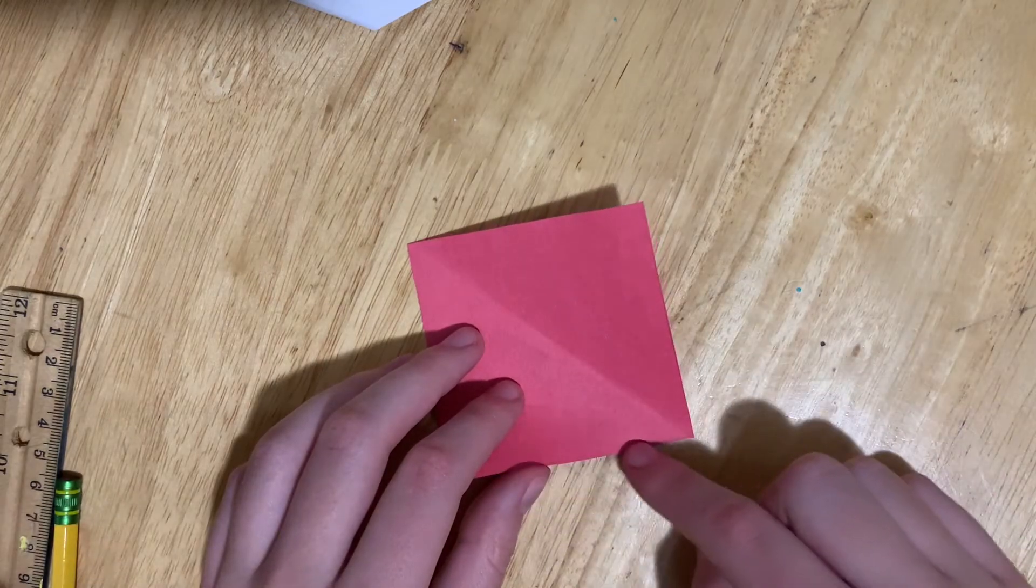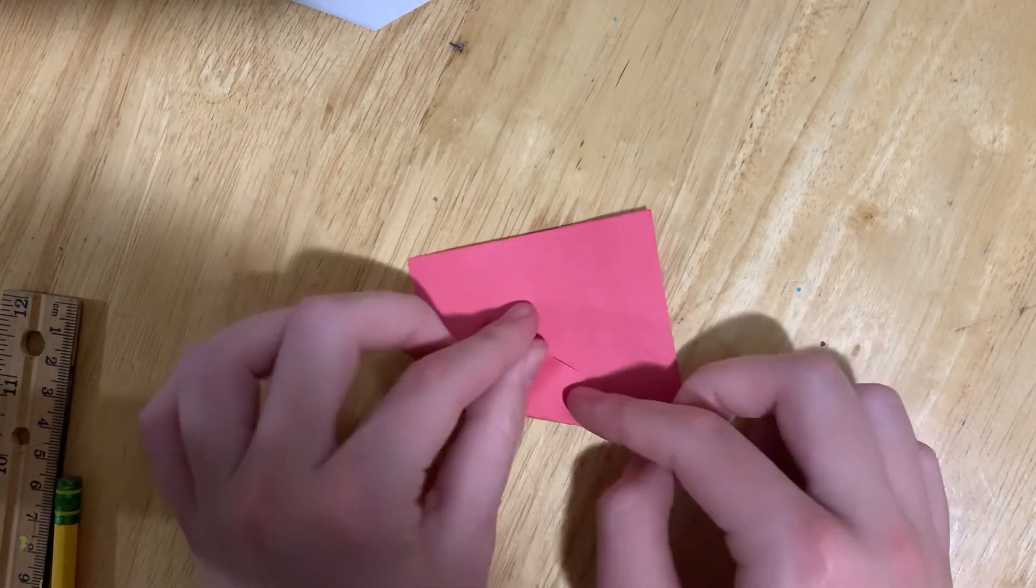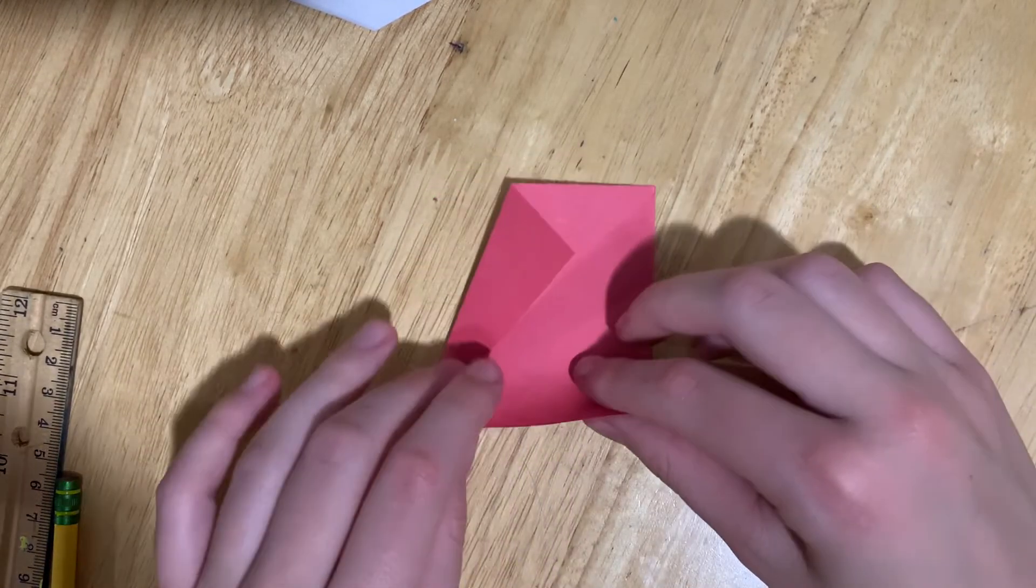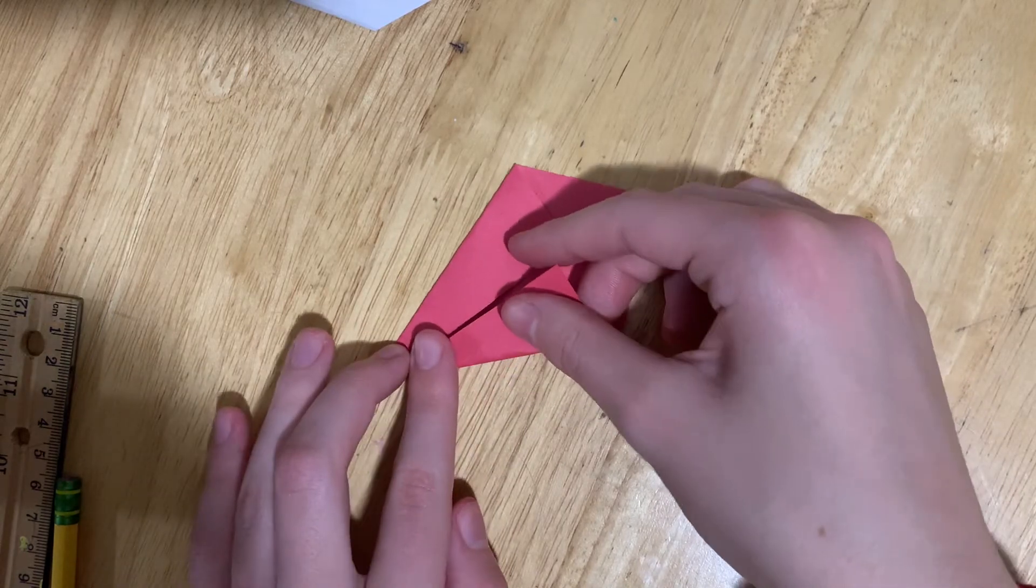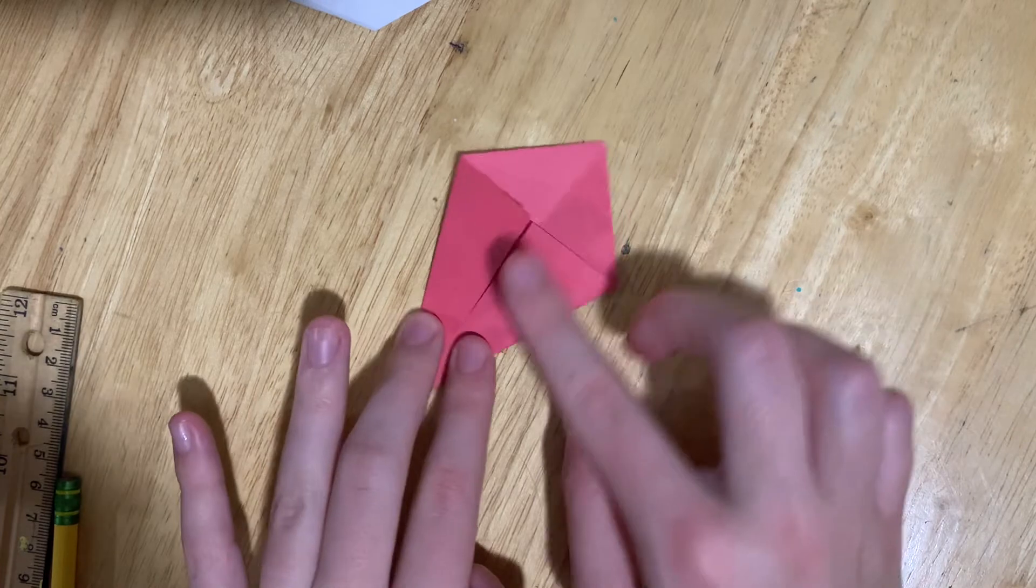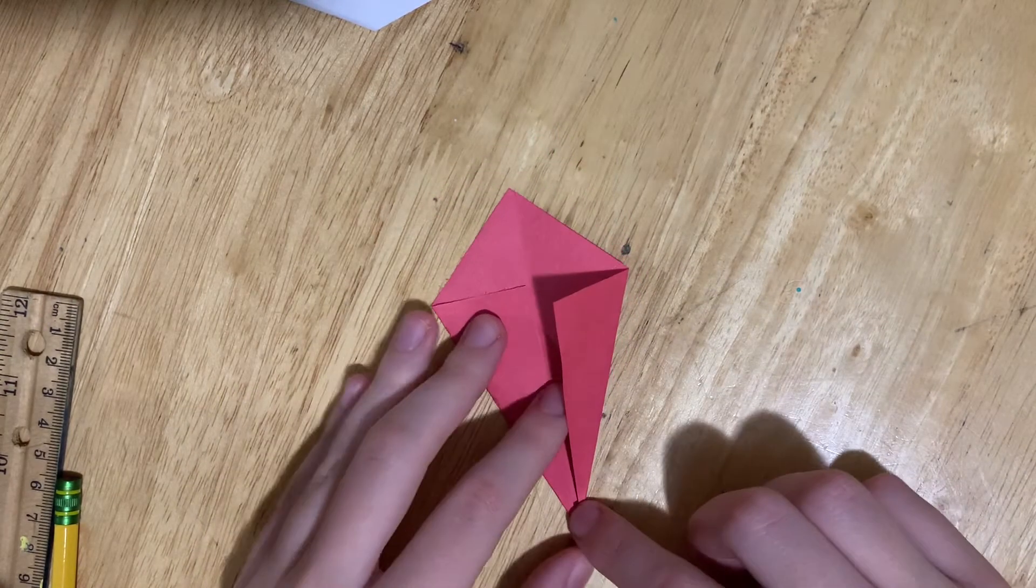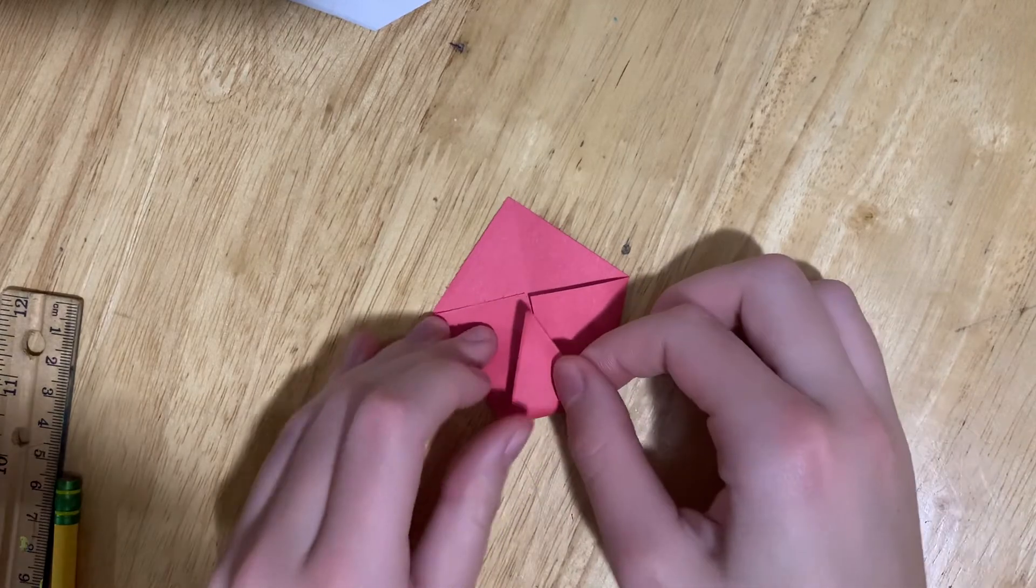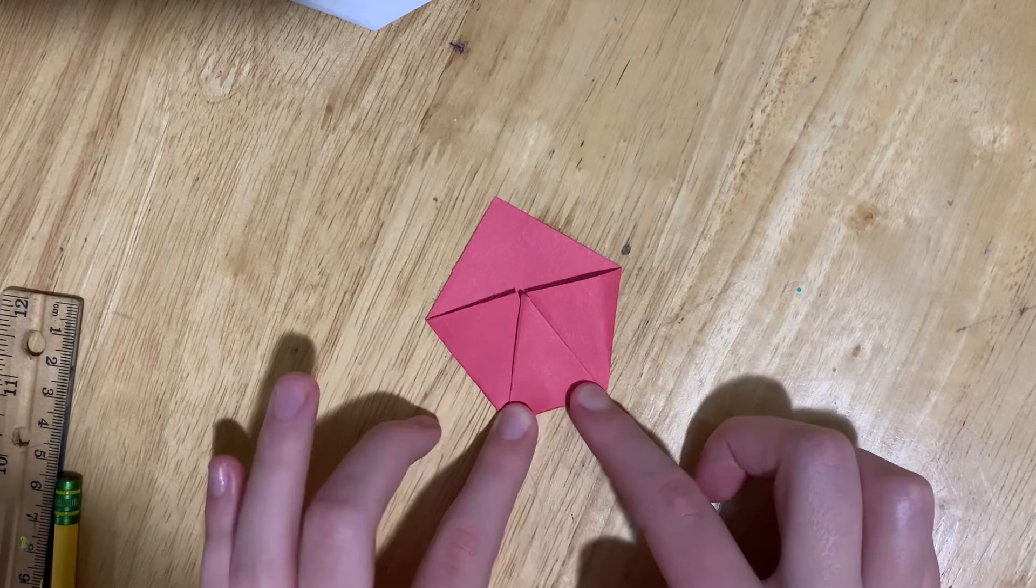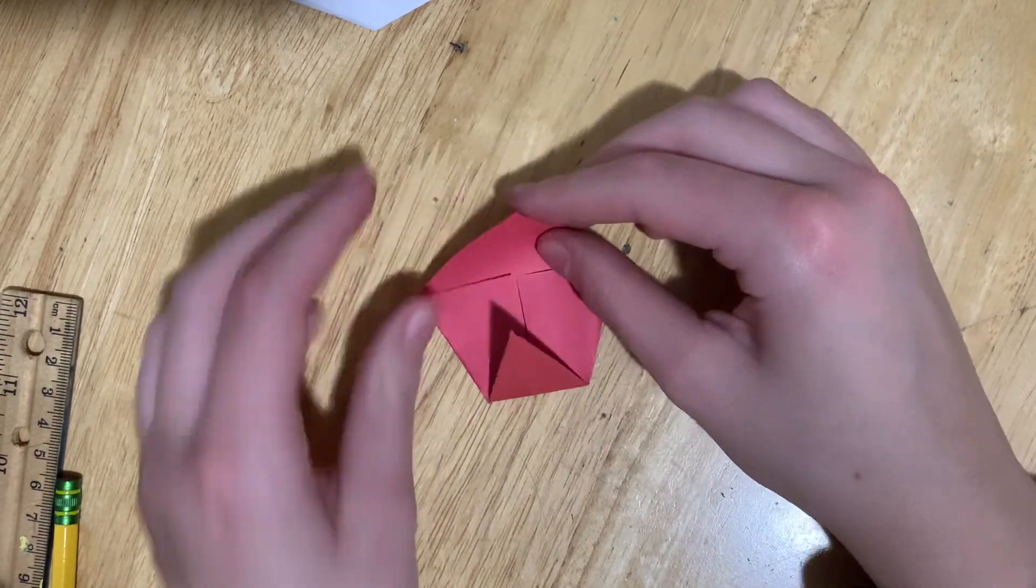Fold the left edge and the right edge to the middle. Then, fold the bottom peak up towards this line and fold this part down.